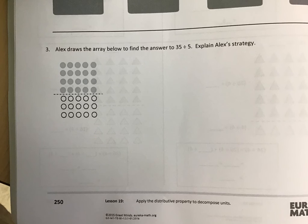We're looking at number 3, which states: Alex draws an array to find the answer to 35 divided by 5. Explain Alex's strategy. So as you can see, what Alex has done here is he's broken the array up.